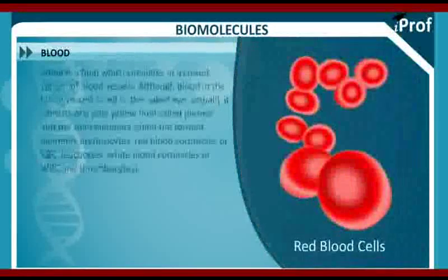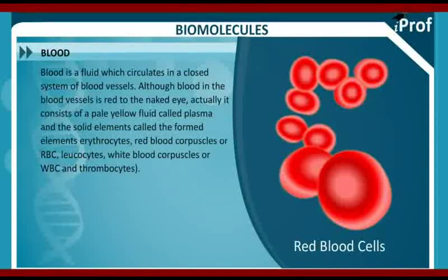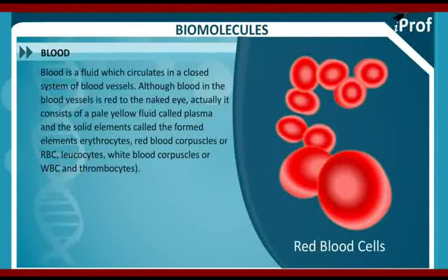Blood is a fluid which circulates in a closed system of blood vessels. Although blood in the blood vessels is red to the naked eye, it actually consists of a pale yellow fluid called plasma, and solid elements called formed elements: erythrocytes (red blood cells or RBCs), leukocytes (white blood cells or WBCs), and thrombocytes.